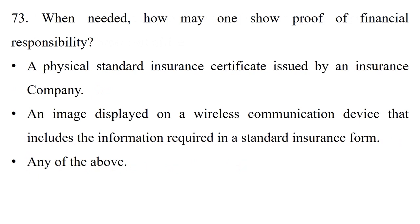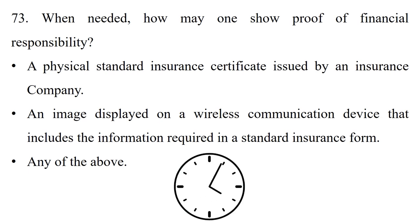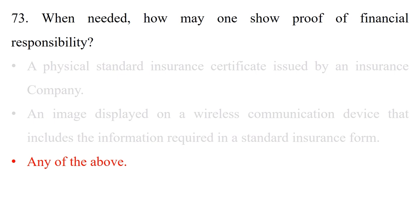Question: When needed, how may one show proof of financial responsibility? Option 1: A physical standard insurance certificate issued by an insurance company. Option 2: An image displayed on a wireless communication device that includes the information required in a standard insurance form. Option 3: Any of the above. The answer is option 3: any of the above.